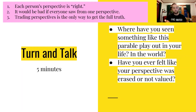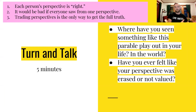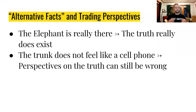I want to point out something you might have discussed: some of you may have brought up the idea of Donald Trump presenting 'alternative facts.' What we're saying here does not justify that kind of perspective. When he says things like that, he's often trying to substitute one view for another — saying that view is wrong and this is the correct view — which is not what we're talking about here. We're talking about how everyone's perspective is somewhat right or close to the truth. Presenting alternative facts that clearly aren't true is similar to saying the elephant doesn't exist, or feeling the elephant's trunk and saying it feels like a cell phone.